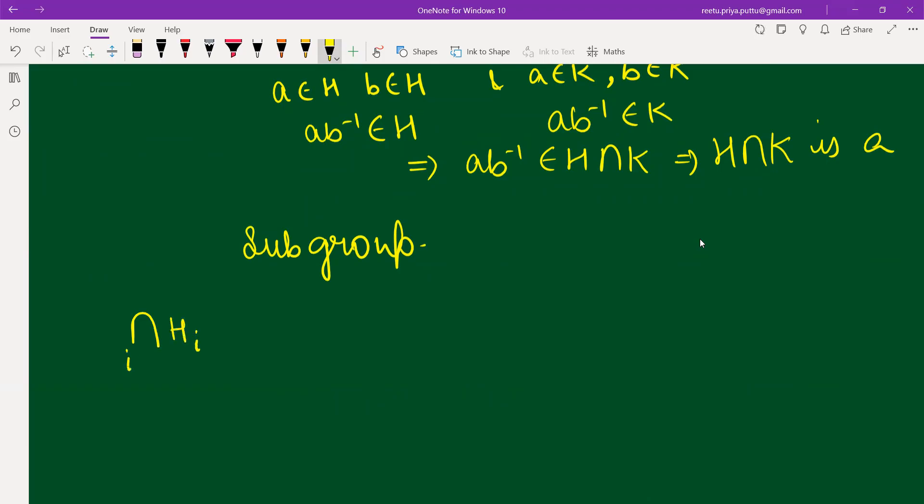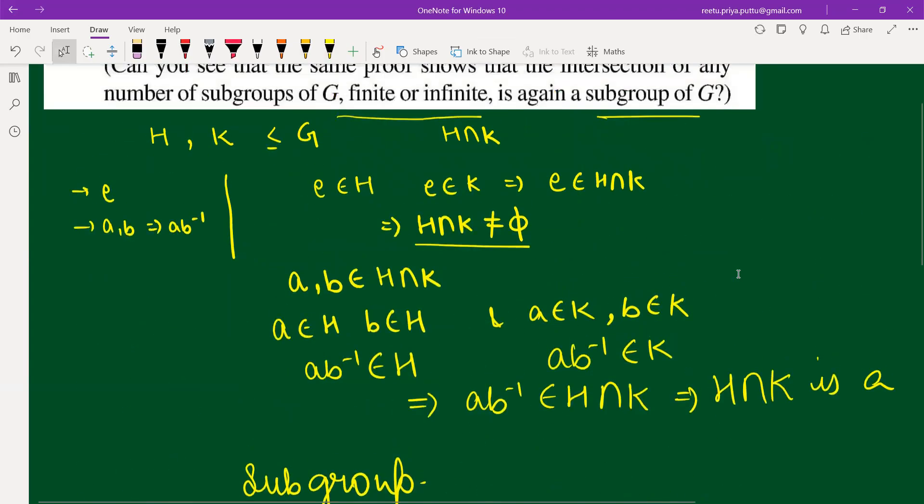Suppose Hi, i is from 1 to infinity, and consider it as K. So K is a subgroup. You have to show that K is a subgroup. Clearly, identity belongs to all Hi for all i, then identity belongs to K. Similarly, you can say a and b you are taking from K, that means a and b will belong to every Hi for all i. Now every Hi is a subgroup, so ab inverse belongs to every Hi. And from here you can say that ab inverse belongs to K, and this is how you can say that K is a subgroup.